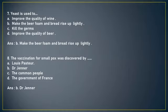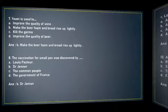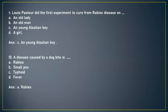Next question: Louis Pasteur did the first experiment to cure rabies disease on (A) an old lady, (B) an old man, (C) a young Alsatian boy, or (D) a girl. The correct answer is option C, a young Alsatian boy. Next: A disease caused by a dog bite is (A) rabies, (B) smallpox, (C) typhoid, or (D) fever. The answer is option A, rabies.